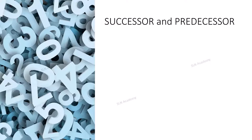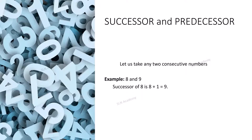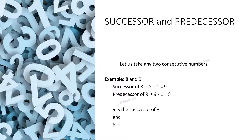Let us observe an interesting pattern in the successor and predecessor concept. Take any two consecutive numbers — 1 and 2, or 8 and 9. For example, with 8 and 9: 9 is the successor of 8 because 8 plus 1 equals 9, and 8 is the predecessor of 9 because 9 minus 1 equals 8.